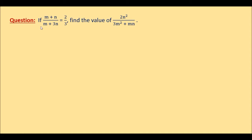Now this is the question. If m plus n over m plus 3n equals 2 over 3, find the value of 2n squared divided by 3m squared plus mn. We can see that in this algebraic expression we have two variables m and n, and we are given the value of this expression which is equal to 2 over 3.